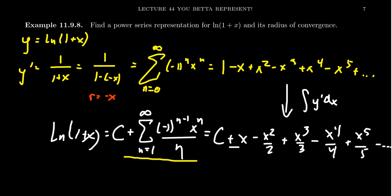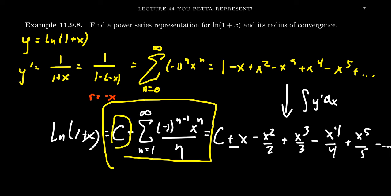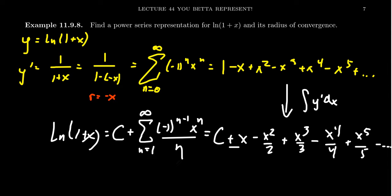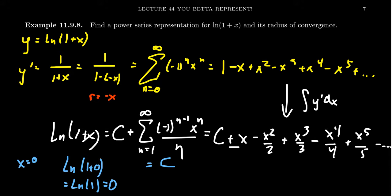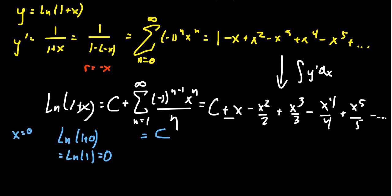This power series representation has one defect — we don't know what the plus C is. But we can figure it out because we know this is supposed to equal the natural log of 1 plus x. So plug in a strategic number: x equals 0 is a great choice because it's the center of the power series. On the left-hand side, we get the natural log of 1 plus 0, which is the natural log of 1, which is 0. On the right-hand side, because we chose the center of the power series, we just get the constant term C. So C equals 0. This is an instance where we would have been justified if we had forgotten the plus C, but we don't want to get it right by making a mistake — we want to do it correctly so we're liable to get truth the next time around.